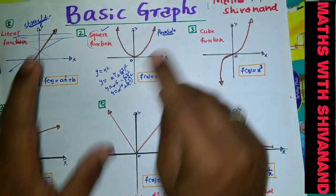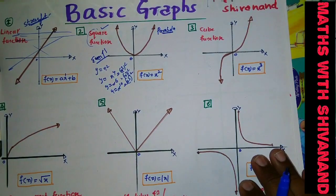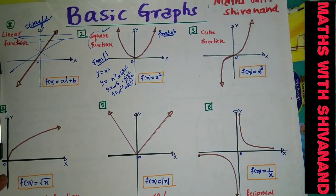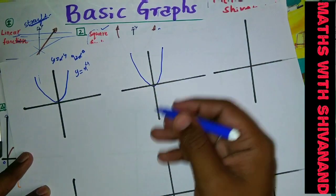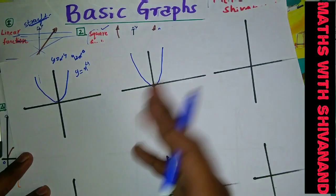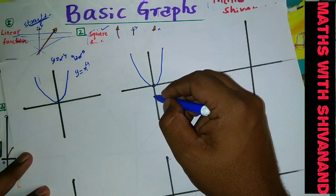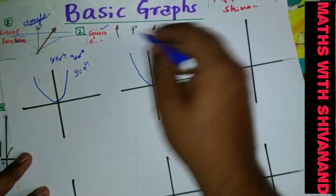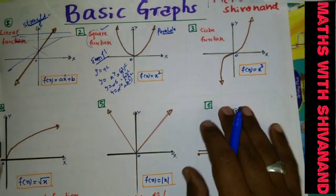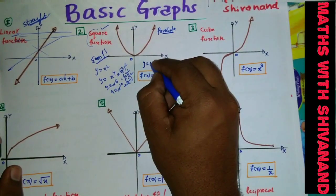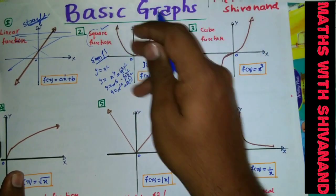All square functions are even functions, and they are symmetrical about the y-axis. If somebody gives you a graph to test whether it is a square function or not, don't just say y = x². Simply say it is a square function. The reason is: you get a minimum point, and it is symmetrical about the y-axis. Based on these hints, we can say it is a square function. So y = x^(2n), where n belongs to positive integers, always comes under this parabolic shape.